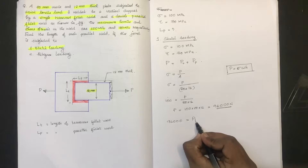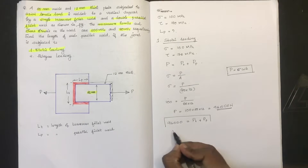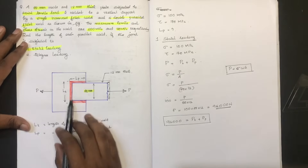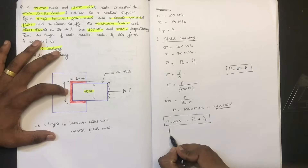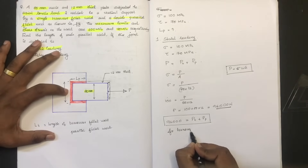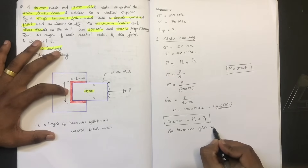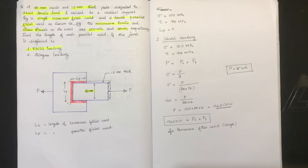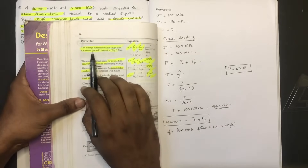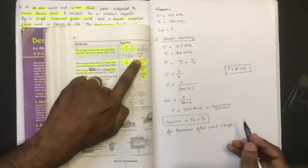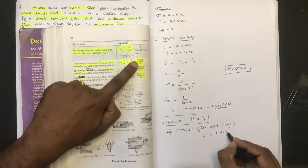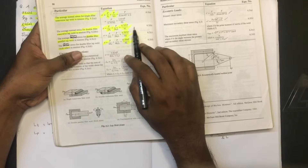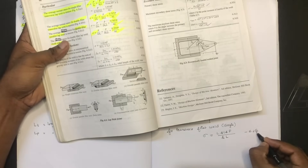P is equal to PT plus PP. PT is the transverse weld component and PP is the parallel fillet weld component. For a single transverse fillet weld, the normal stress equation from the data book is sigma equal to 1.414 PT divided by (H into LT). This is equation number 6.2A, page number 90.